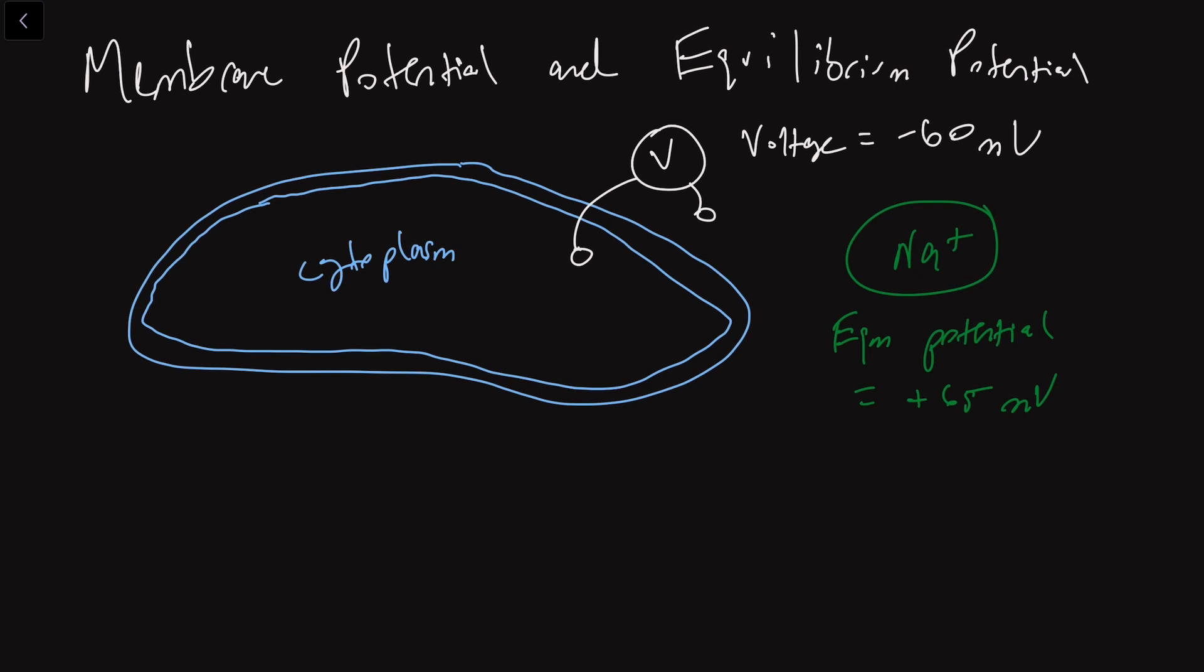The membrane potential of your cells is pretty highly regulated, and for most cells we're looking at a value of minus 60 millivolts. What does that mean?